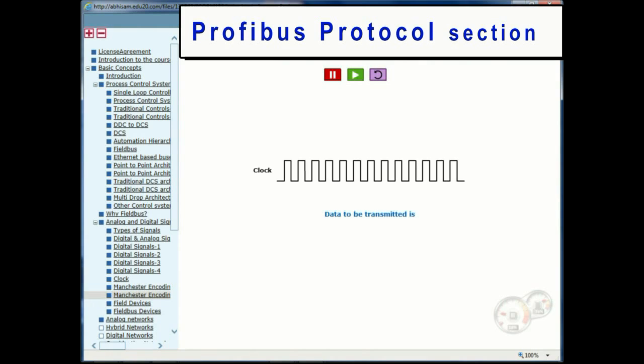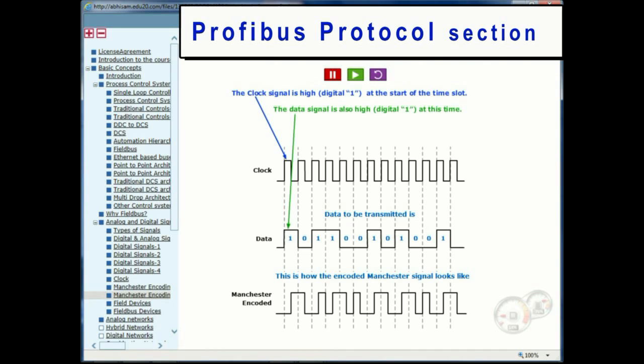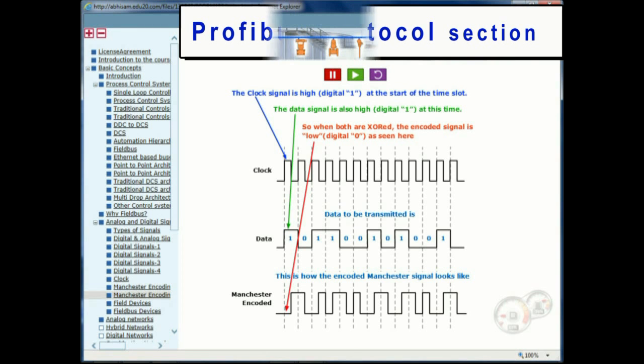Difficult to visualize concepts like Manchester encoding are made easy with animations as shown in this sample. This is what the Manchester encoded signal looks like. The dashed lines show the time slots. The clock signal is high at the start of the time slot. The data signal happens to also be high at this time. So when both signals are XORed, the resulting Manchester code is low, a zero, as an exclusive or circuit outputs zero if both inputs are one.